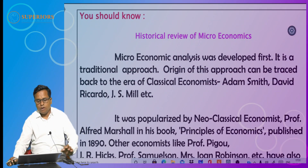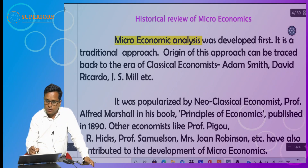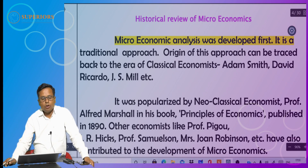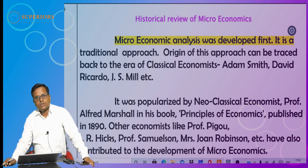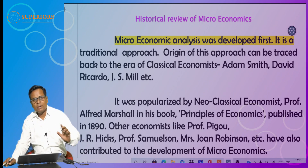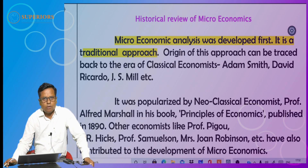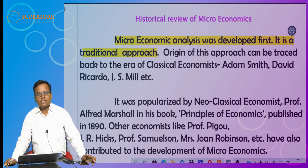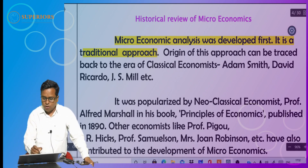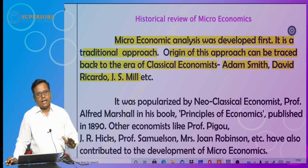Now let us look at the historical review of microeconomics. Microeconomic analysis was developed first — it is a traditional approach, developed before macroeconomic analysis. The origin of this approach can be traced back to the era of classical economists such as Adam Smith, David Ricardo, and J.S. Mill. There are three different kinds of economists: classical economists, neoclassical economists, and modern economists, each having different views towards economic activities and concepts.